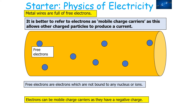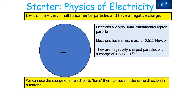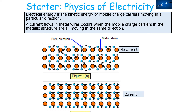The electrons are mobile charge carriers because they contain a negative charge. From your work in particle physics, you should know that electrons are very small fundamental particles which are part of the lepton family and have a negative charge. So they will have a charge of minus 1.60 times 10 to the minus 19 coulombs. Charge is a fundamental property of a material, much like colour is, but you can't really visualise charge — only the behaviour it causes. We can use the charge of an electron to force them to move in the same direction, which we can consider as the kinetic energy of mobile charge carriers moving in a particular direction.